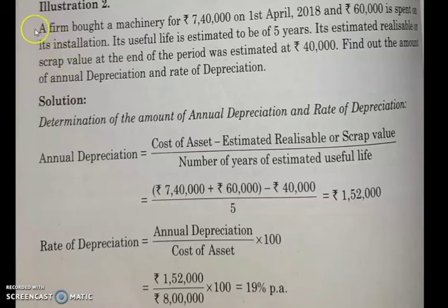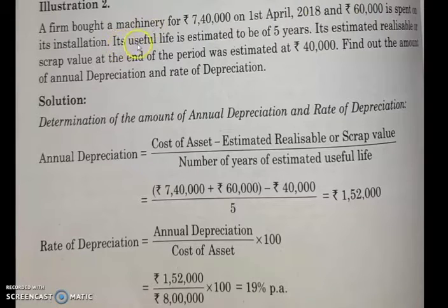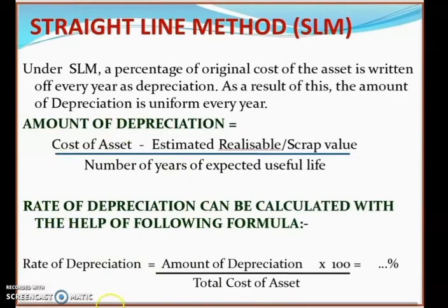Problem 1: A firm bought machinery for ₹7,40,000 on 1st April 2018, and spent ₹60,000 on its installation, making the total cost ₹8,00,000. The useful life is estimated at 5 years, and the estimated scrap value at the end of the period is ₹40,000. Find the amount of annual depreciation and the rate of depreciation.